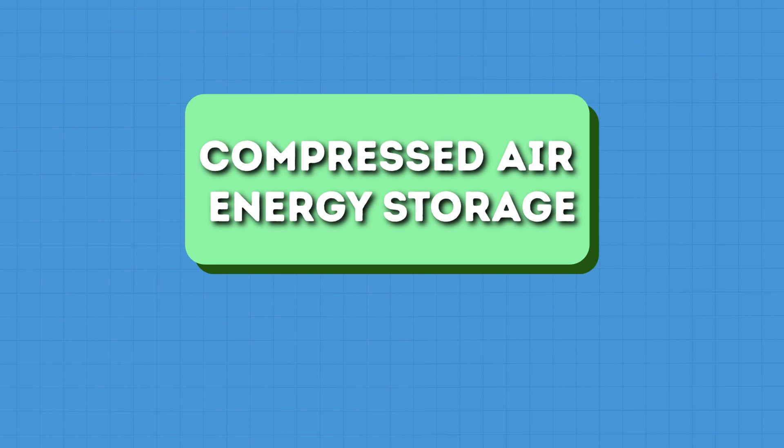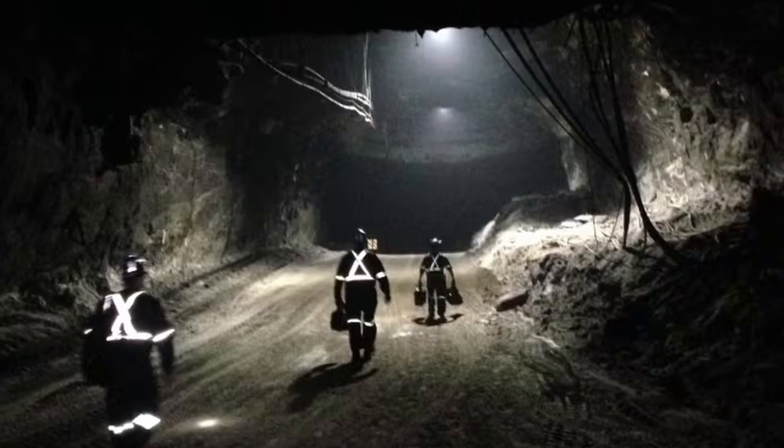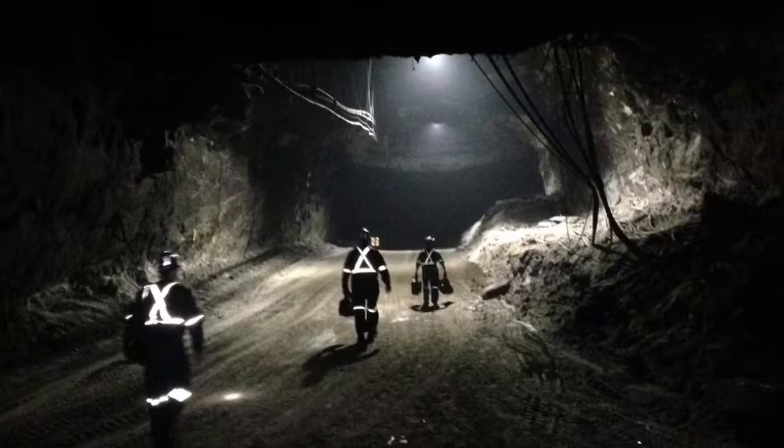Can we simply store energy with air? Apparently so, but it's not that simple. This technology is called compressed air energy storage, or CAES for short. In a nutshell, compressed air energy storage uses electricity to compress and store air into underground reservoirs or purpose-built tanks, which can later be used to generate electricity when needed. This video will explain how it works, the different types, and its pros and cons.